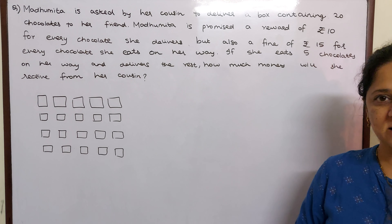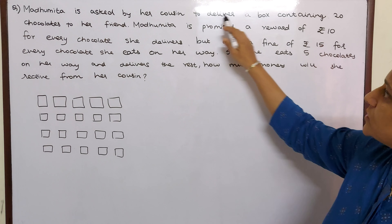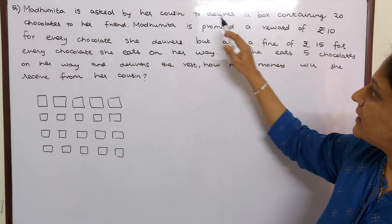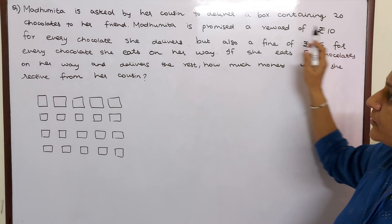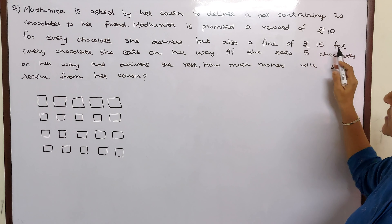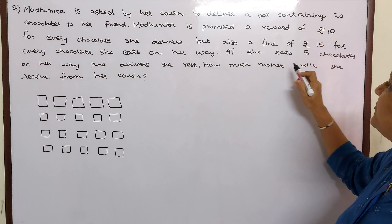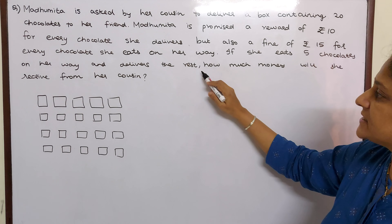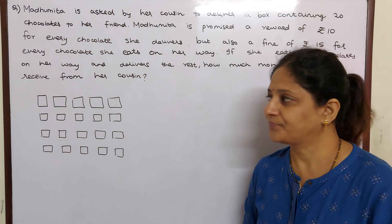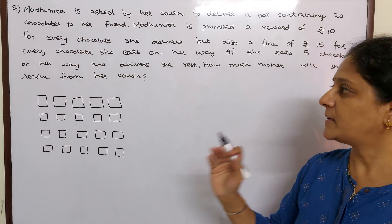Hello children, let's move to the next word problem. Madhumita is asked by her cousin to deliver a box containing 20 chocolates to her friend. Madhumita is promised a reward of Rs. 10 for every chocolate she delivers, but also a fine of Rs. 15 for every chocolate she eats on her way. If she eats 5 chocolates on her way and delivers the rest, how much money will she receive from her cousin? So let us break this word problem and understand sentence by sentence.